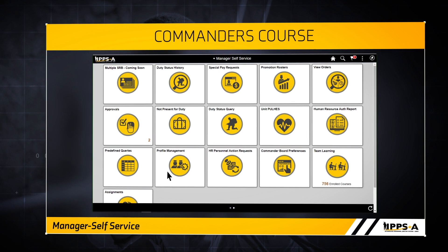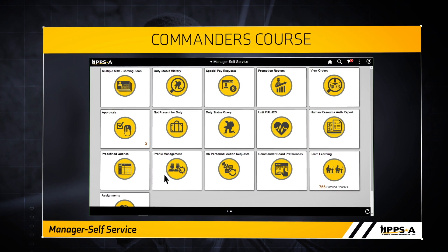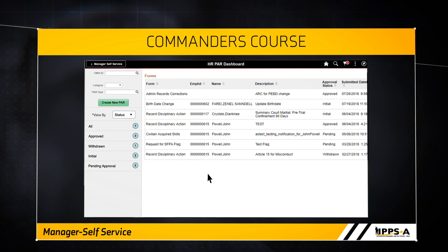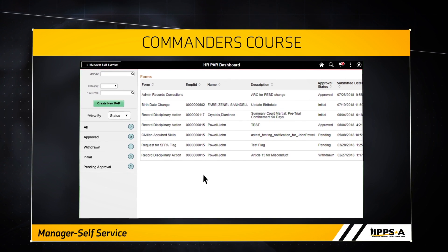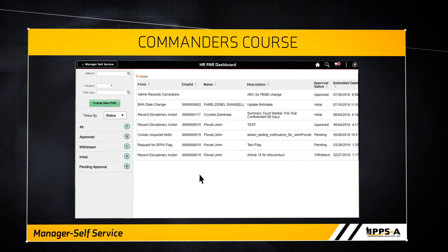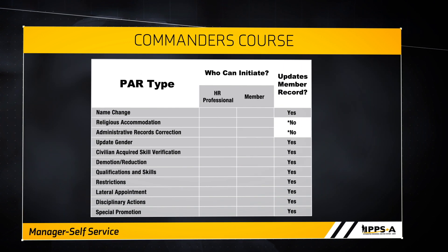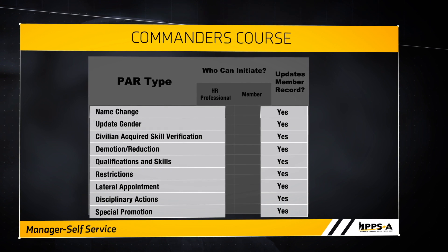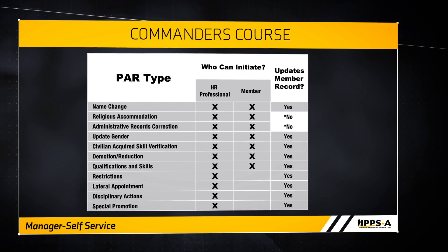A significant change that IPSA will bring to the Army is the automation of Personnel Action Requests, or PARs. PARs will replace the DA Form 4187. The HR Personnel Action Request tile launches the HR PAR dashboard, which allows you to view and approve PARs. As a commander, you can easily create new PARs, though it is unlikely that you will need to. Some PARs, once approved, will automatically update a member's record and produce the applicable order. We will cover orders in the workflow video of this series.